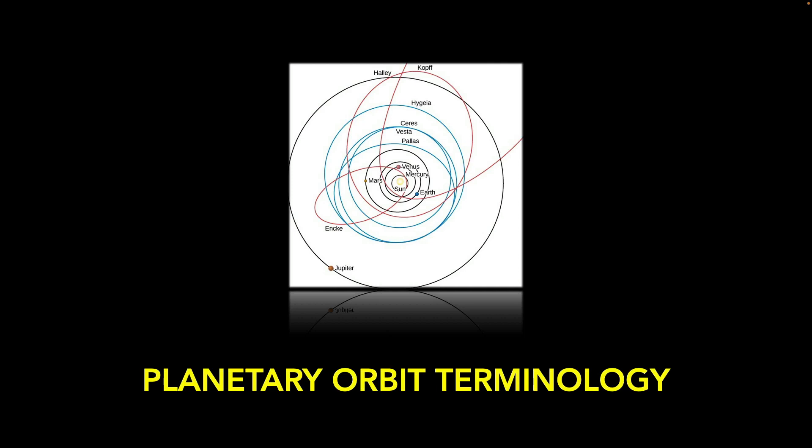Today we're going to learn about the terminology we use to describe the orbits of planets around the sun and some of the arrangements and the time it takes them to make their orbits.